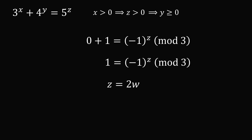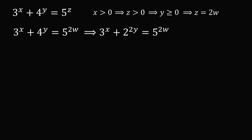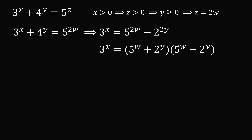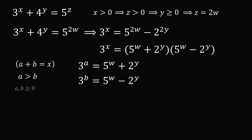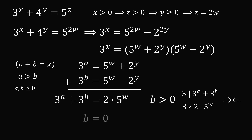That means z is equal to 2w for some integer w. We substitute that into the equation. Since 4 is equal to 2 squared, we can subtract 2 to the power of 2y from both sides. The right-hand side is then a difference of squares, so we can factor that. Since 3 is a prime, each factor must be 3 raised to some power. We set one factor equal to 3 to the power of a, and the other to 3 to the power of b, where a plus b equals x and a is greater than b. If b were greater than 0, then 3 would divide the left-hand side but not the right-hand side — a contradiction. Thus b is equal to 0.